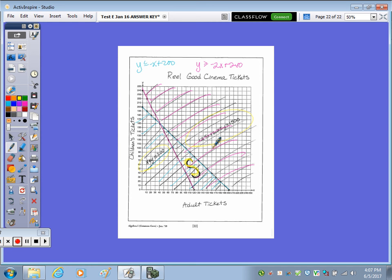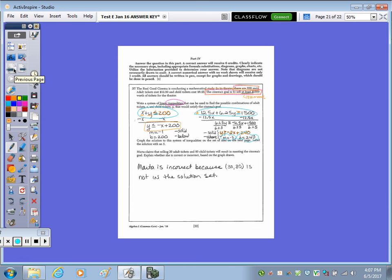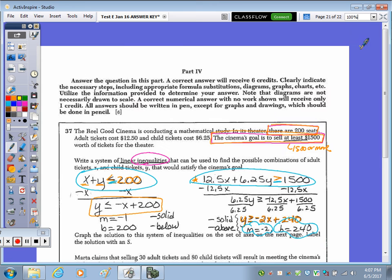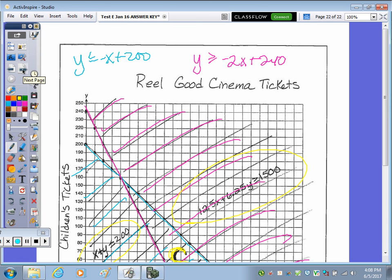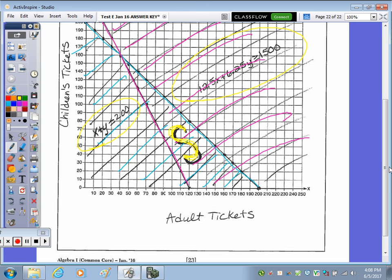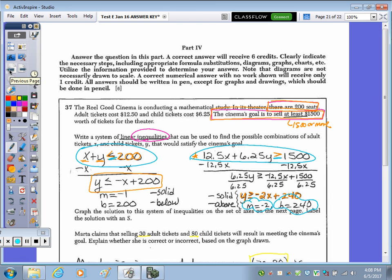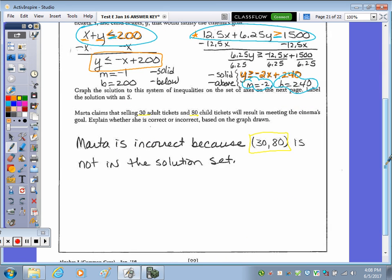Back on the other side, Marta claims selling 30 adult tickets and 80 children's tickets, which the point would be (30, 80), will result in meeting the cinema's goal. Explain whether she is correct or incorrect. So if we go back to the graph, 30, 80, right here is not in our solution set. So therefore she's incorrect because it does not lie in the solution set.